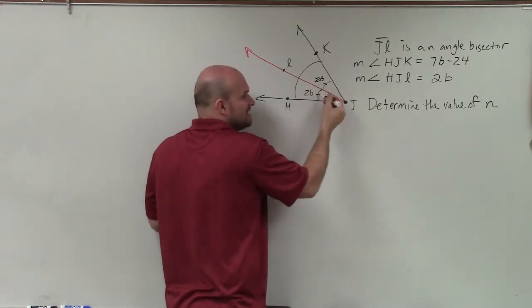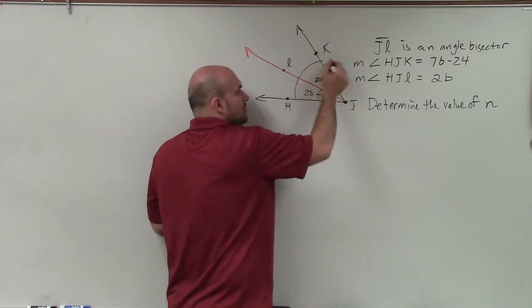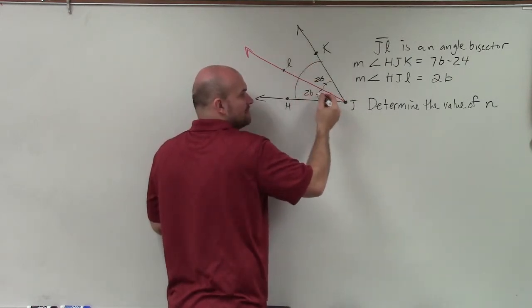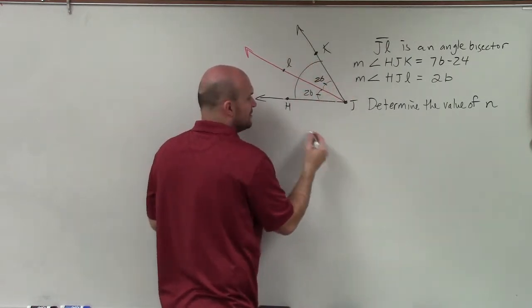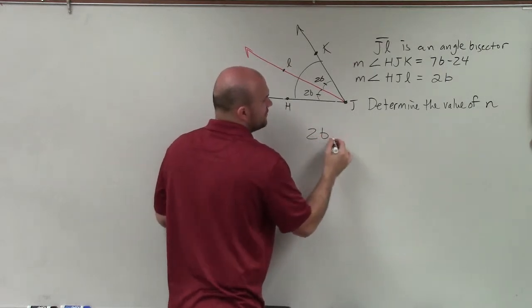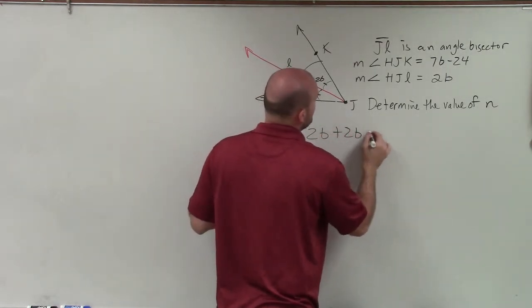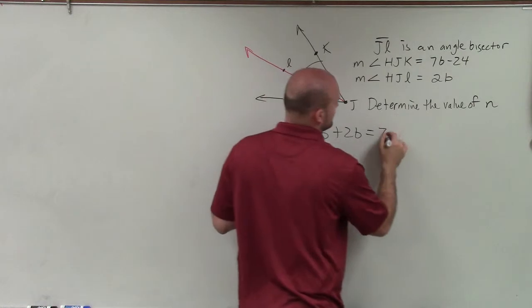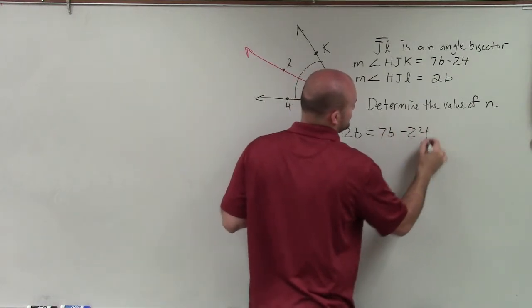And understanding that this plus this has to equal the measure of the large angle. This plus this is equal to the measure of the angle. So I need to solve for B so I can write 2B plus 2B is equal to 7B minus 24.